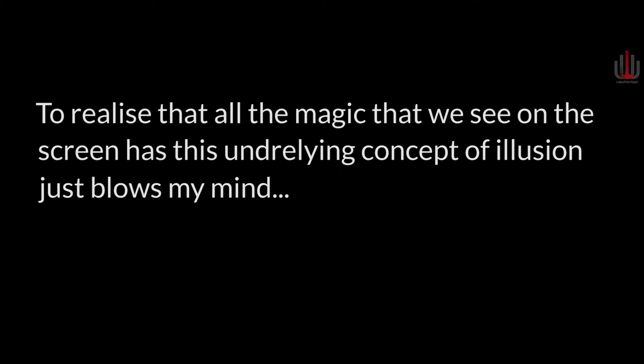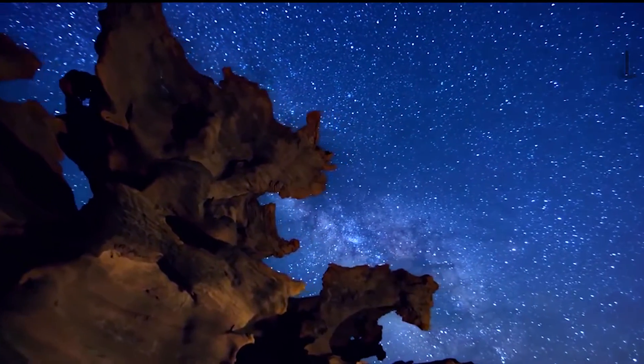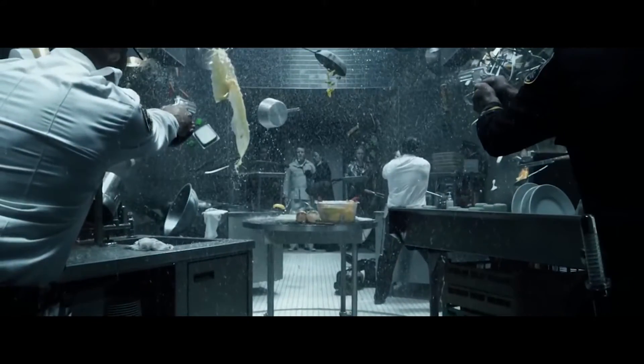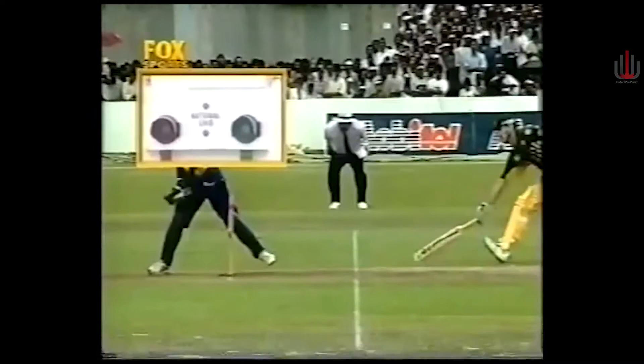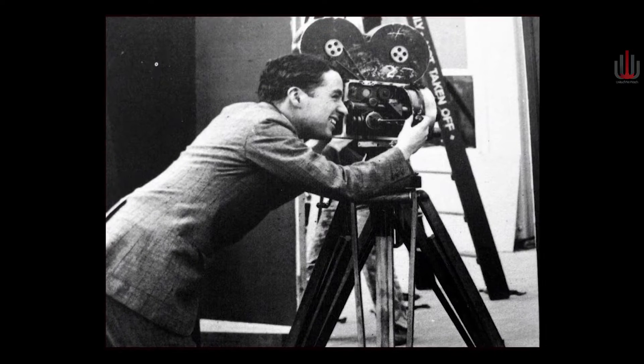Realizing that all the magic we see on screen has this underlying concept of illusion or trick just blows my mind every time I think of it. A camera and the final output video are very important to how footage is perceived and understood. 24 frames per second is more or less a standard today, as anything lesser than that gives a non-fluidic feel. For slow motion sequences, cameras are required to shoot at more than just 24 frames per second, at higher frames per second, to capture clean, high quality slow motion.